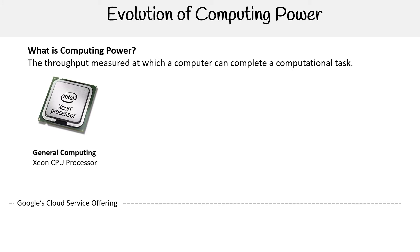The ones we're all most common with are CPUs — just like what's in your computer or laptop. When talking about cloud computing, the ones we commonly see are Xeon CPU processors, because they're very, very good processors. The offering at any cloud service provider is via virtual machines, and for Google, their virtual machines are offered via Compute Engine.